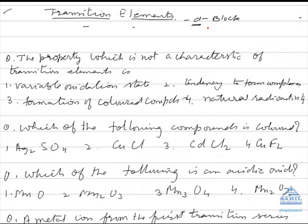The d orbital can accommodate 10 electrons, so there are 10 groups numbered from 3 to 12. Groups 3, 4, 5, 6, 7 and so on are all d-block elements. Their general electronic configuration is n minus 1 d 1 to 10 ns 2.